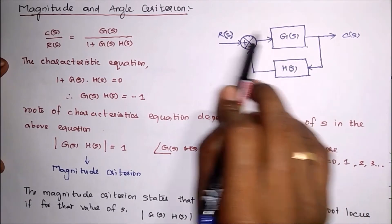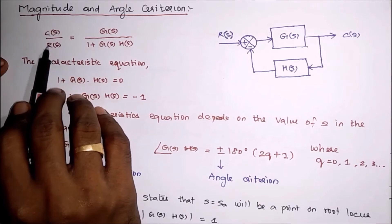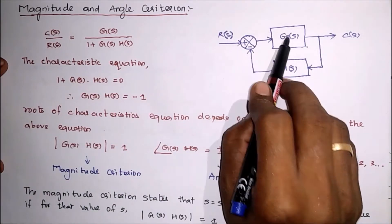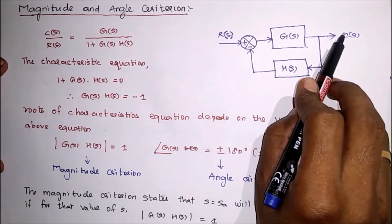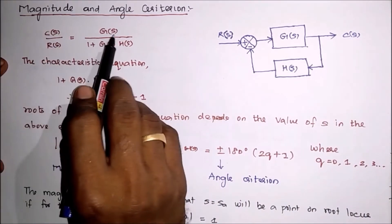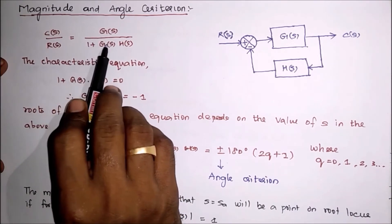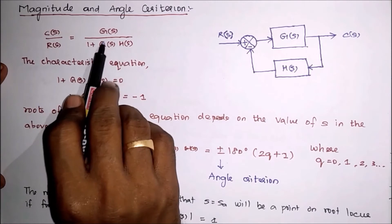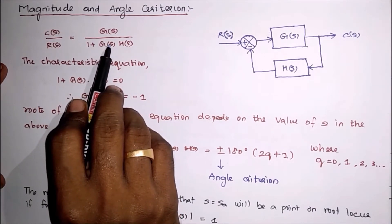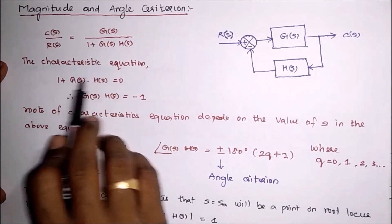From this, the equation of the transfer function equals the Laplace transform of output divided by the Laplace transform of input. Since the system gain, input, and output are all in Laplace transform, output divided by input equals the transfer function equals G(S) divided by 1 plus G(S) into H(S).